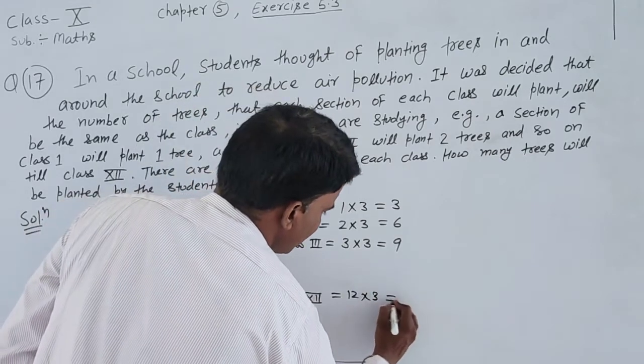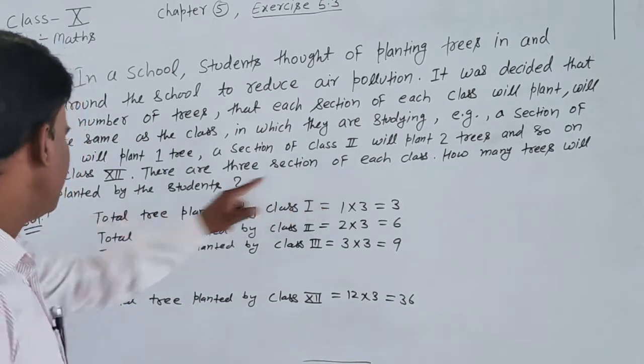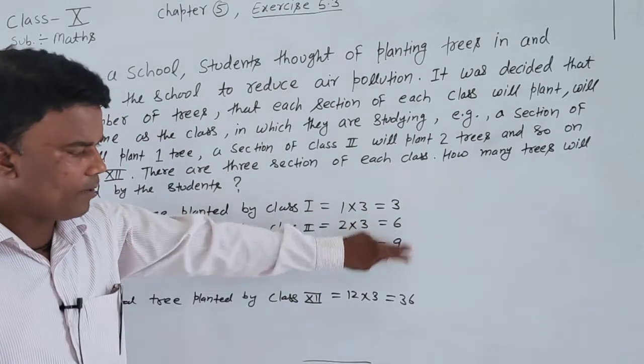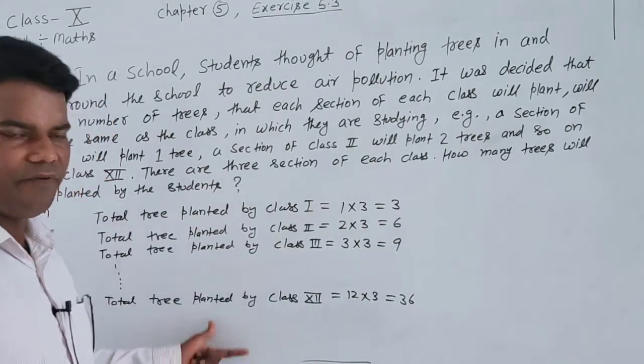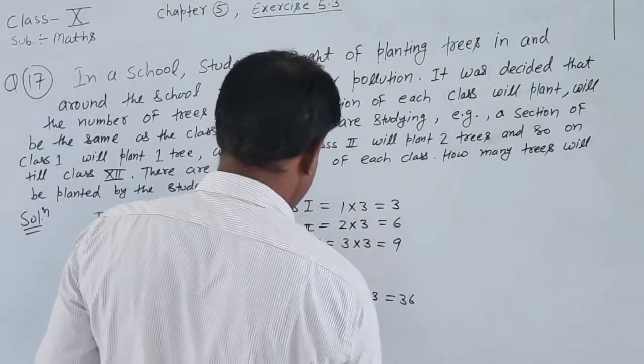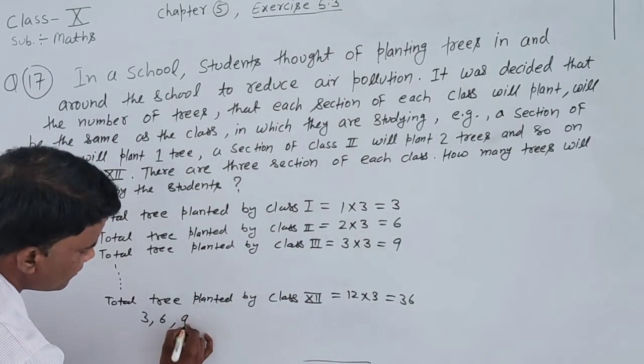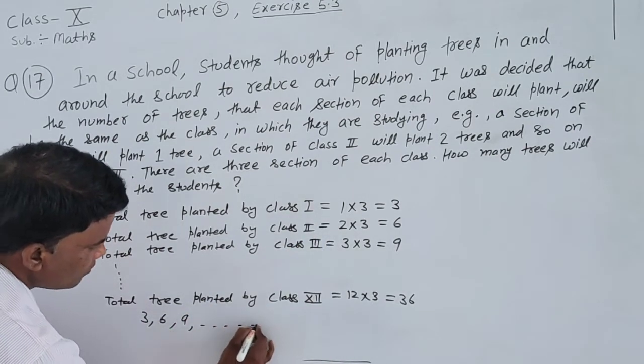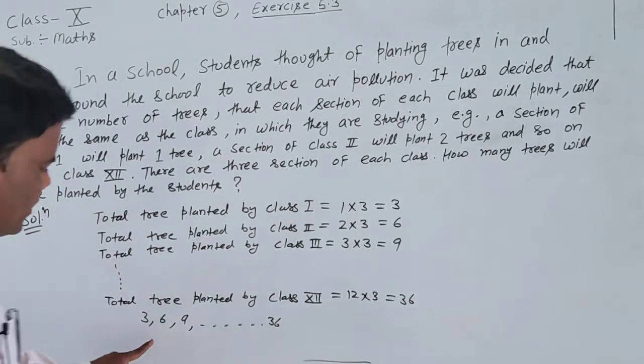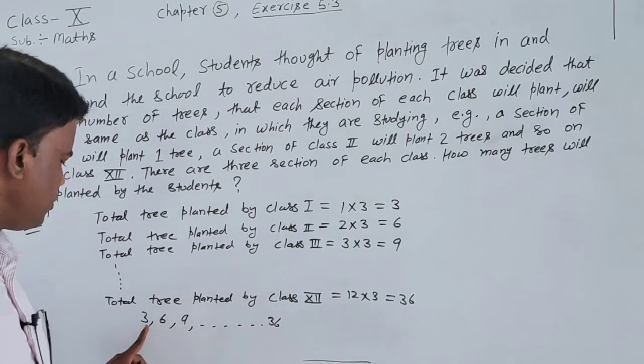How many trees will be planted by all students in total? We need to find the sum. The given series is 3, 6, 9, and so on. The last term is 36, and the total number of terms is 12.